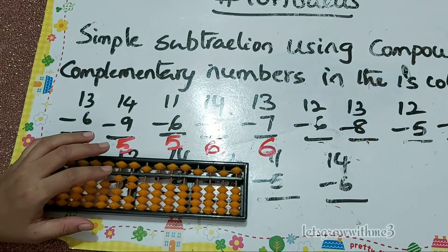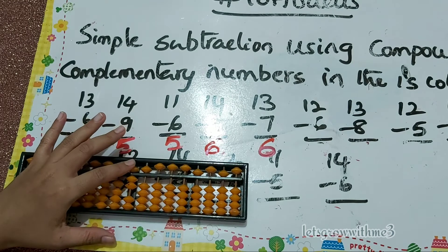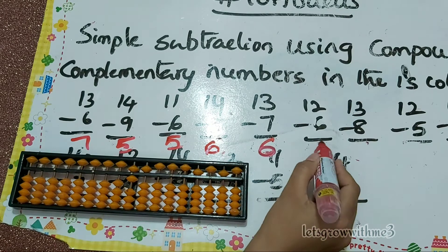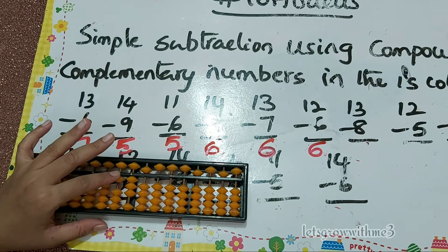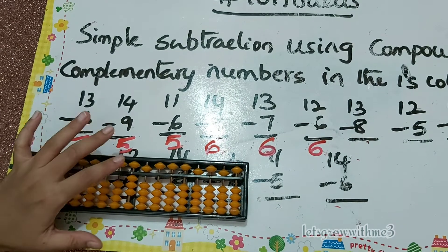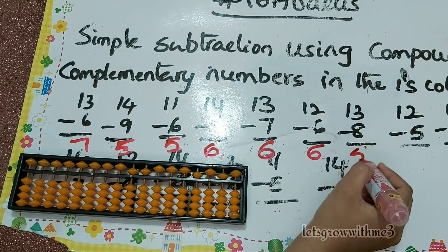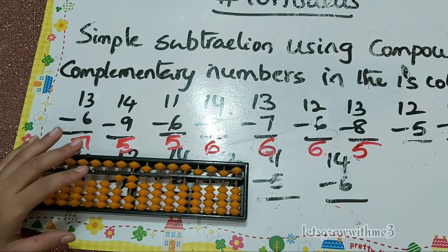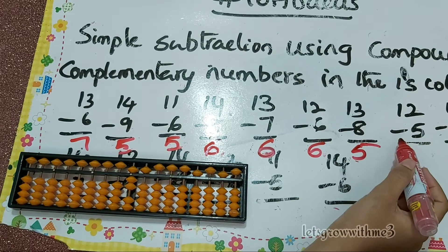Next: 12 minus 6 equals 6. Next: 13 minus 8 — minus 10 plus 5, so 3. The answer is 5. Next: 12 minus 5 — minus 10 plus 5, so the answer is 7.